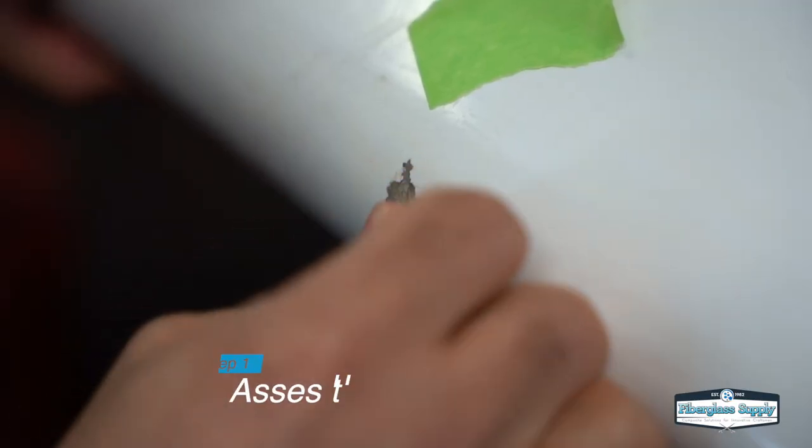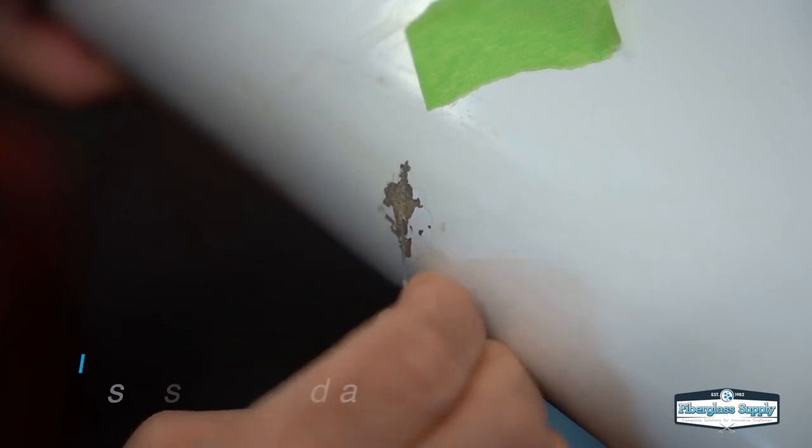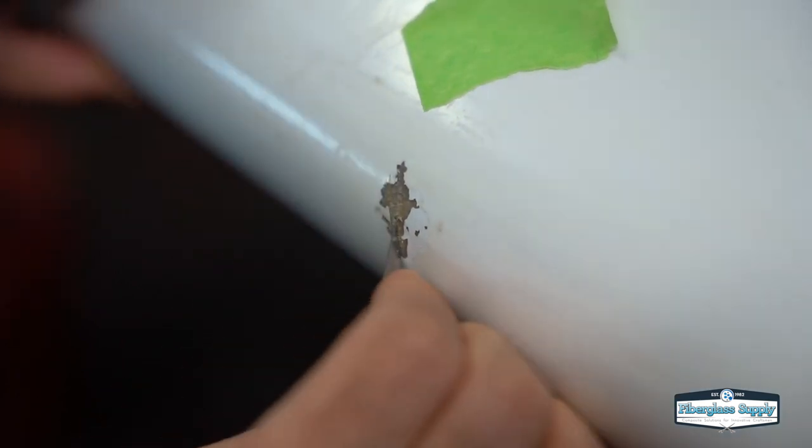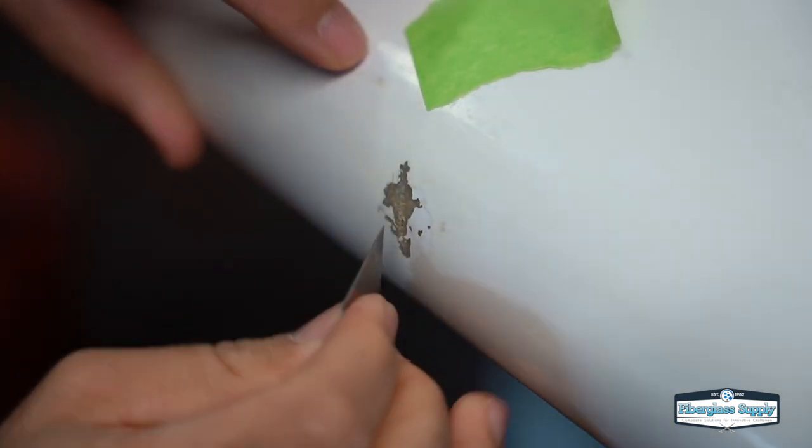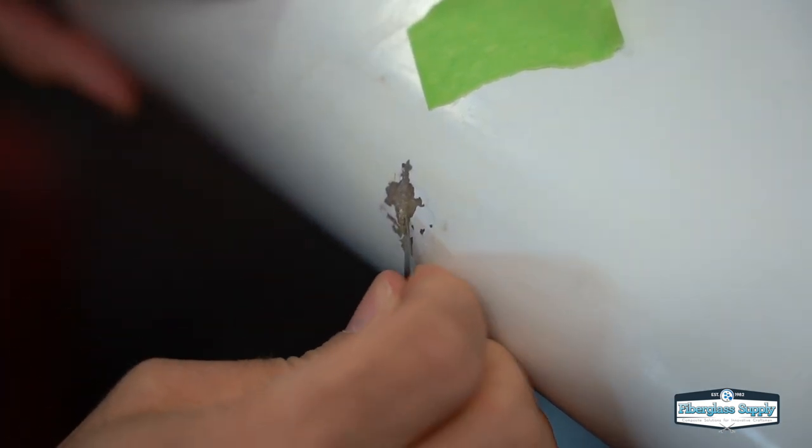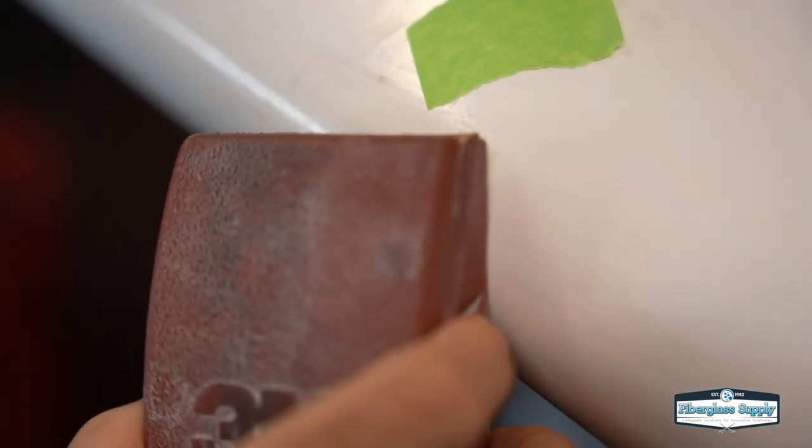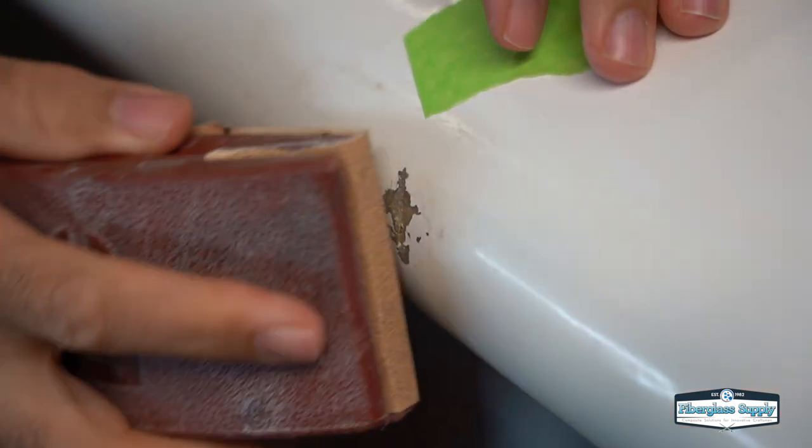So the first step is to assess the damage. In this case, I've got a utility knife blade and we're getting in there and taking a look and figuring out how bad this is. The fiberglass, at least on the surface here, has been cracked and broken. So we need to replace that so that we have a watertight seal and we still have the same structural integrity in the board.